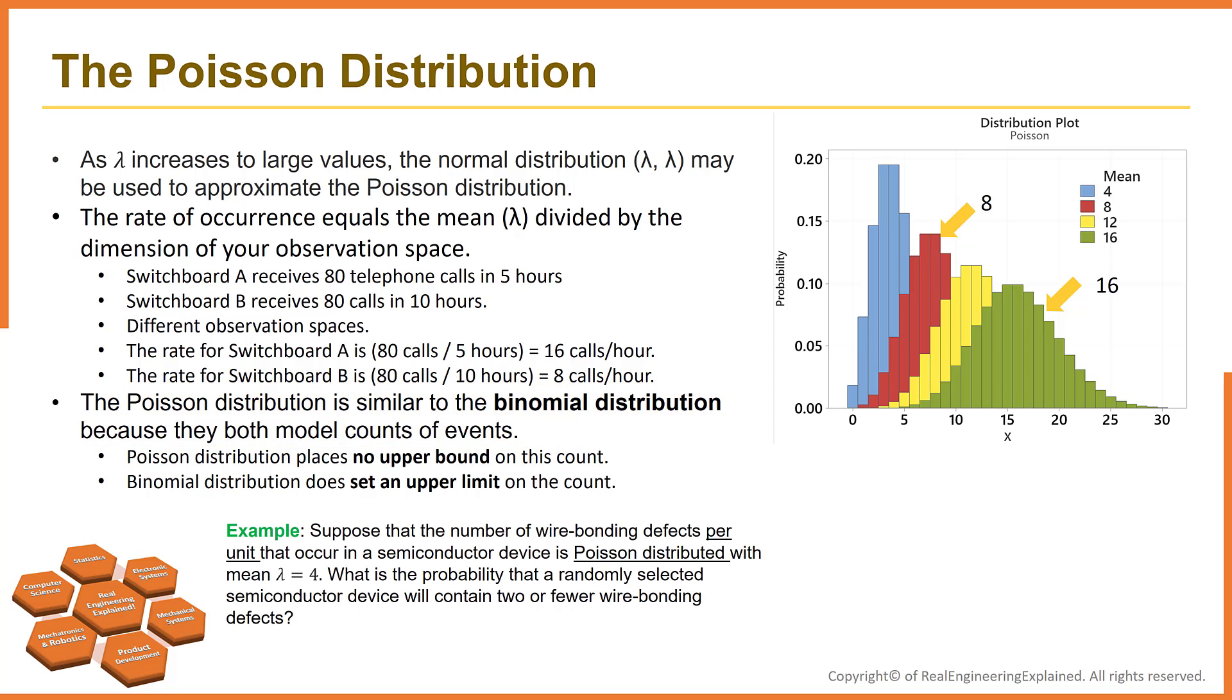So, suppose the number of wire bonding defects per unit that occur in a semiconductor device is Poisson distributed with mean λ = 4. What is the probability that the randomly selected semiconductor device will contain two or fewer wire bonding defects?